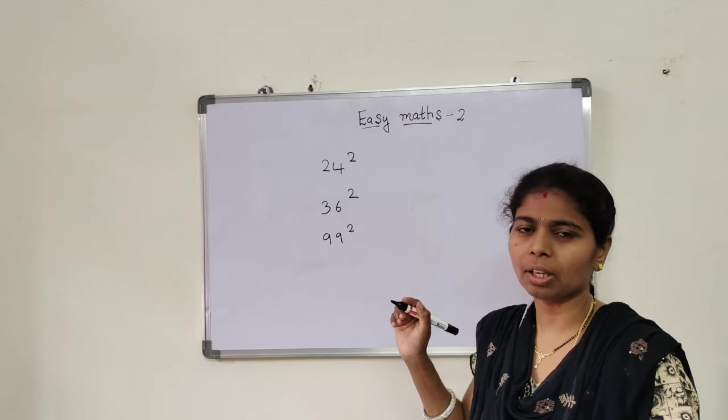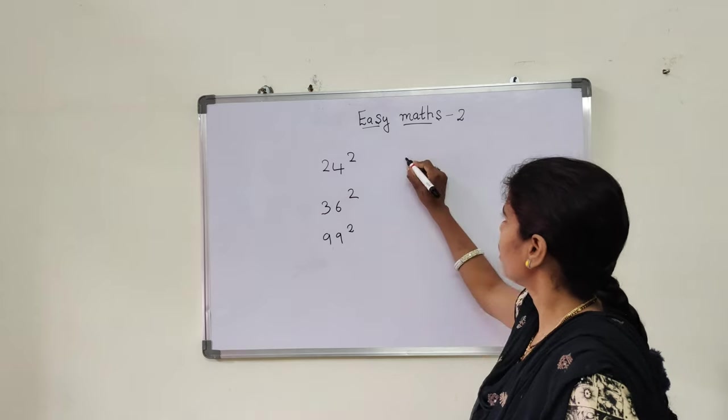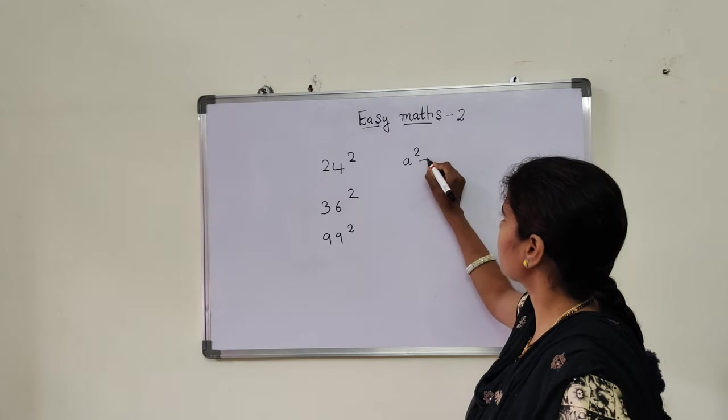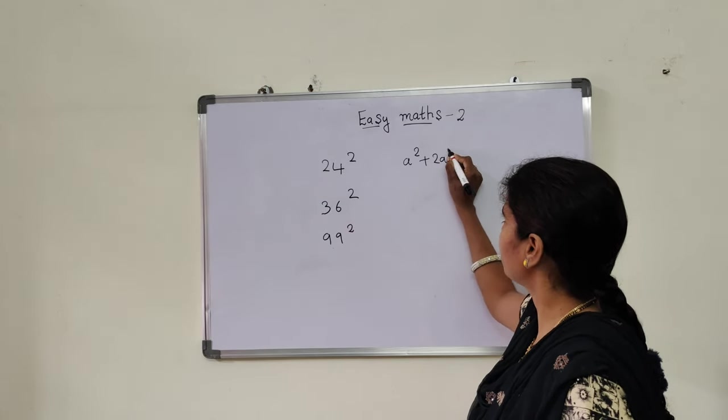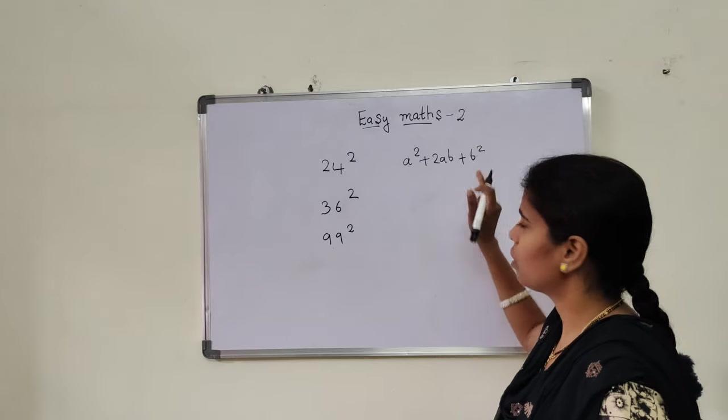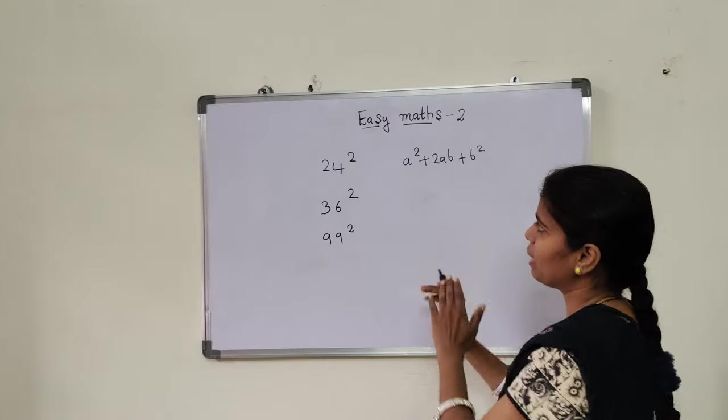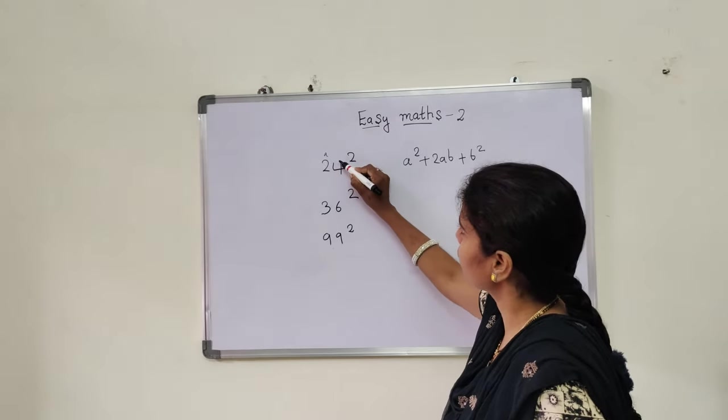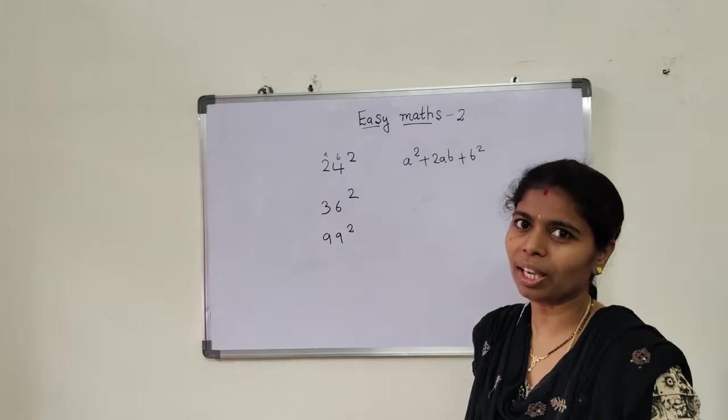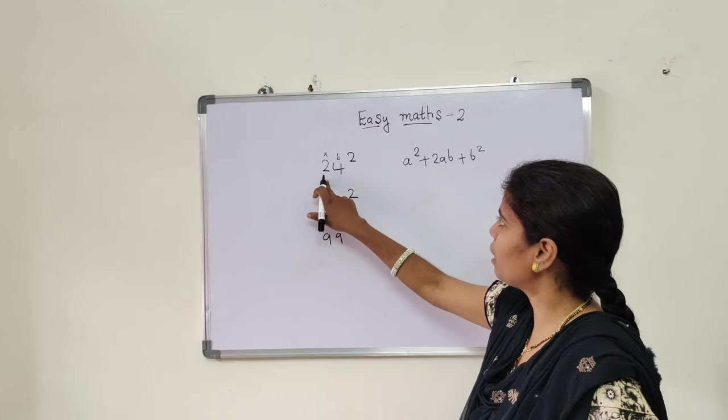See, simple technique. Most of you know this: a² + 2ab + b². Everyone knows this thing now. So same thing we are going to apply here. We will consider this as A and this as B. Now for this square, A and B.